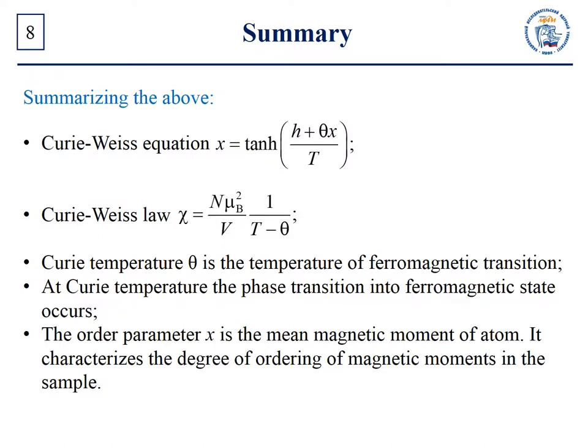In this lesson, we obtained the Curie-Weiss equation and introduced the Curie-Weiss law. The Curie-Weiss equation determines the dependence of the order parameter, or magnetization, on temperature and magnetic field. The temperature dependence of magnetic susceptibility is referred to as the Curie-Weiss law. Note that if the exchange integral is equal to zero — in other words, the exchange interaction is absent — then the Curie temperature is equal to zero and we obtain the Curie law. Theta in the Curie-Weiss law denotes the Curie temperature, which is the transition temperature into the ferromagnetic state. The order parameter is the mean magnetic moment of an atom; if the magnetic moments of the solid have a preferred orientation, then the order parameter is not equal to zero and magnetic order is present.